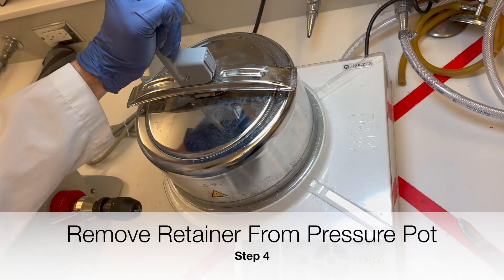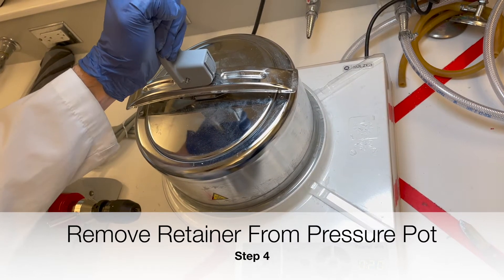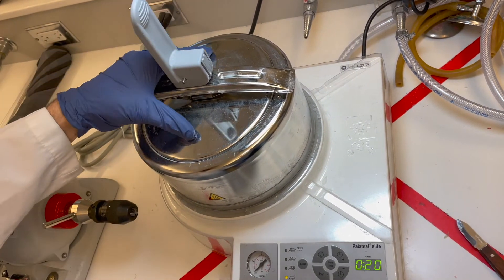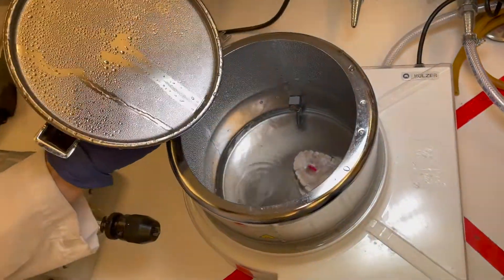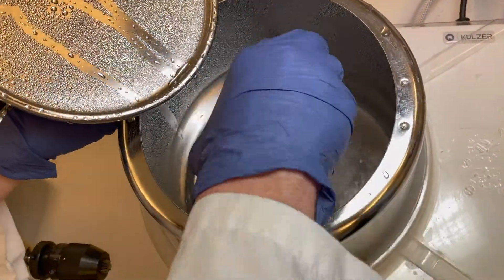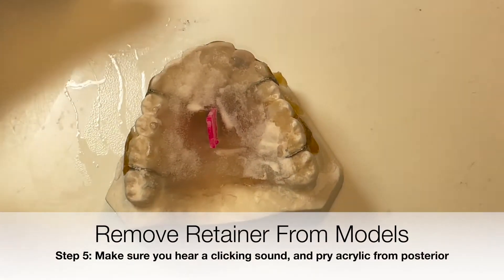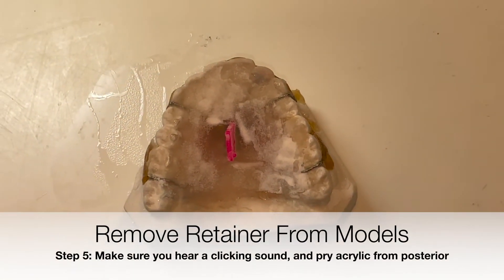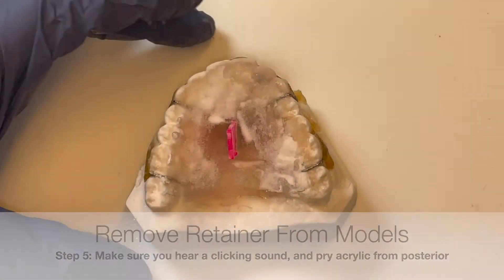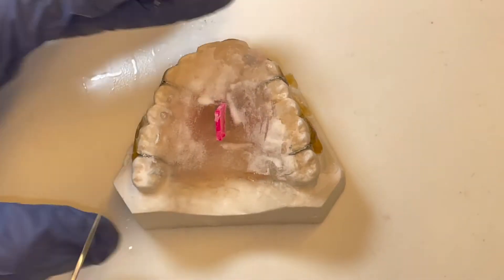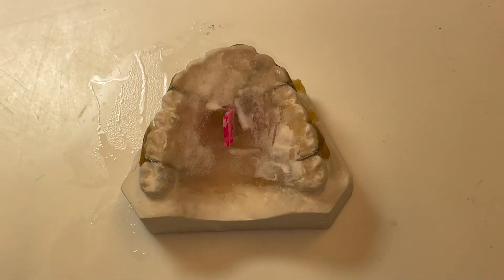When the time is up, release the pressure and remove the retainer from the pressure pot. Once you remove the retainer from the pressure pot, you want to use a Murphy knife or an instrument and tap it to hear a clicking sound. That's how you know your acrylic was cured.